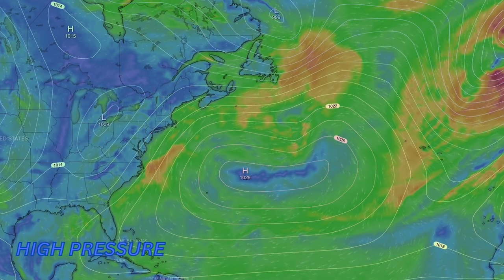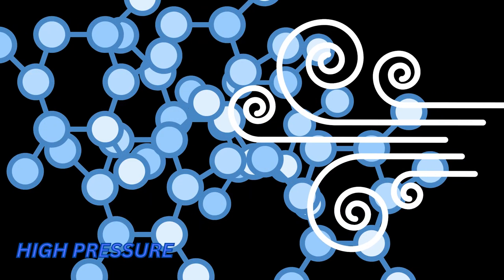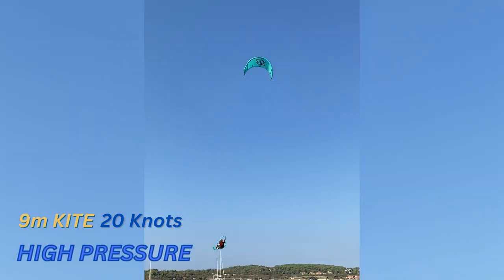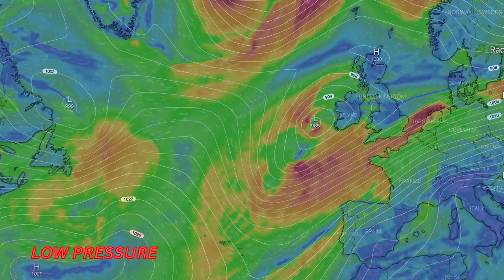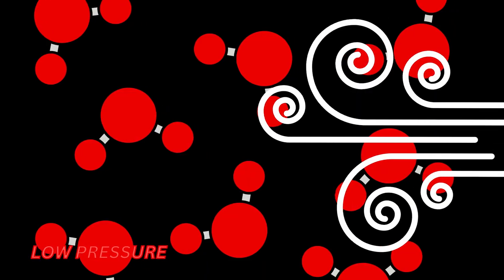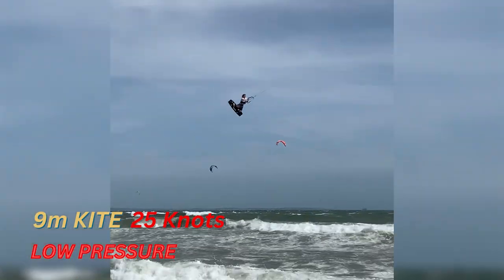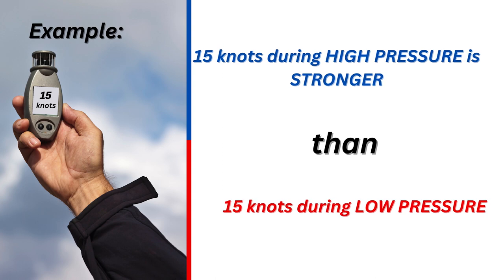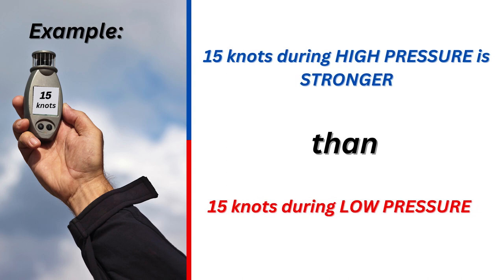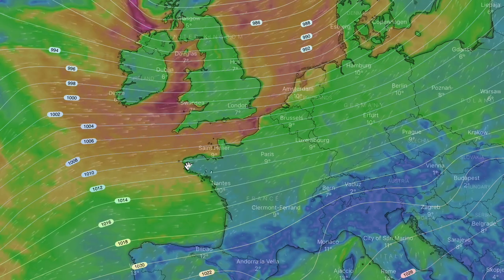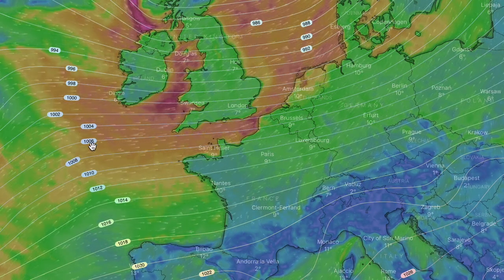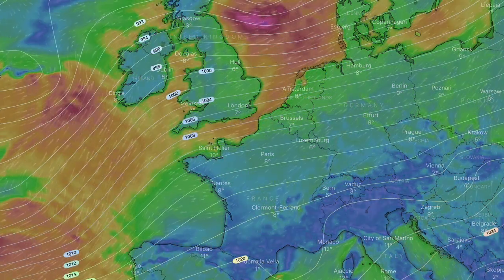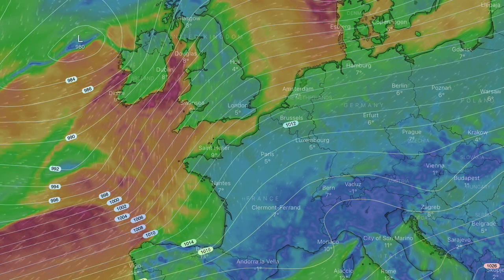During high pressure, as the wind is colder, it is denser, so you can expect more power in your kite — it's good wind for jumping higher. During low pressure, the wind is warmer and less dense, so sometimes it's hard to jump super high. 50 knots in high pressure feels much stronger than 50 knots during low pressure. I highly recommend watching the satellite forecast so you can better understand what quality of wind to expect.